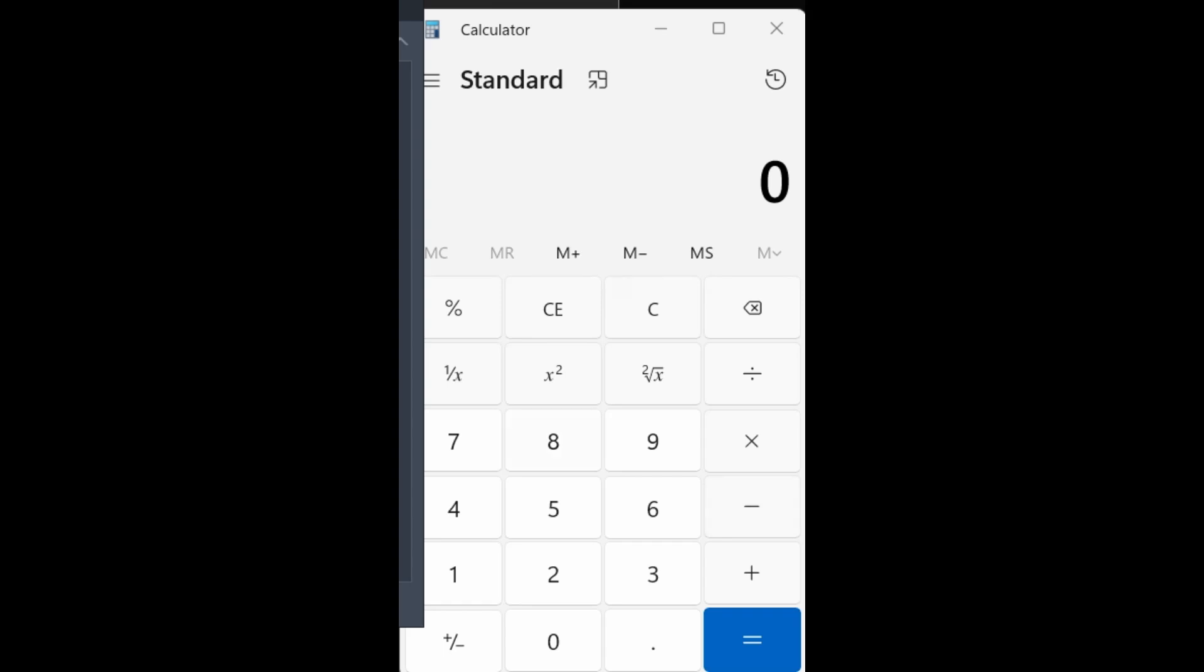All right, so we are going to do the problem here. It's 8 minus 8 times 8 plus 8. Now you'll notice already that I'm using a standard mode calculator on a Windows 11 computer.